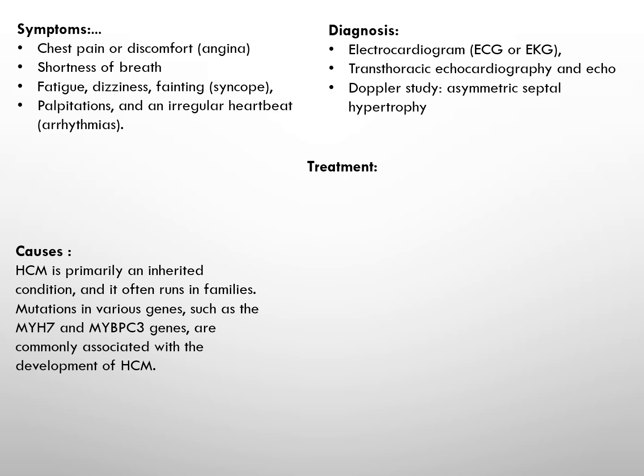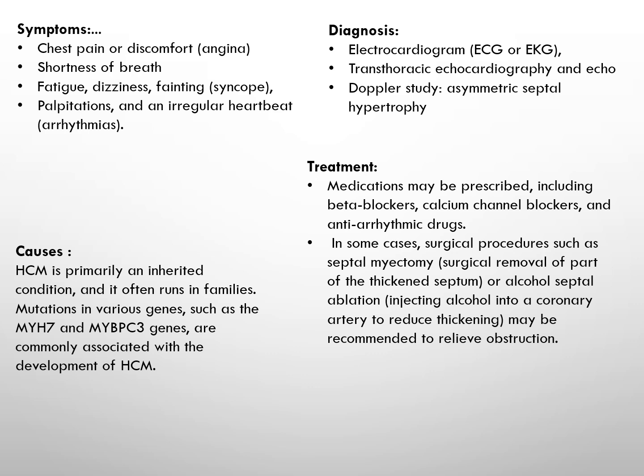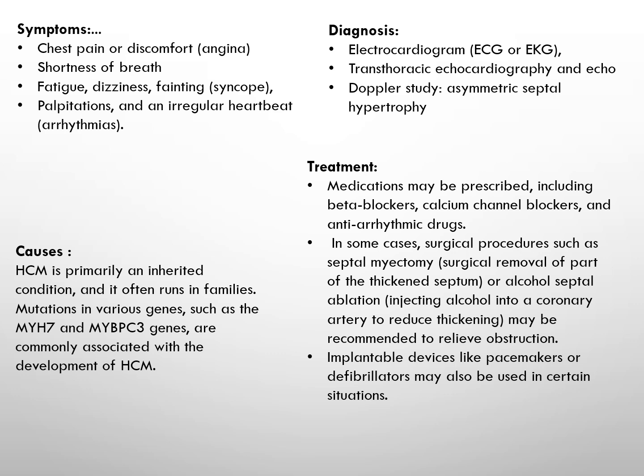Treatment for hypertrophic cardiomyopathy aims to manage symptoms, prevent complications, and improve heart function. Medications may be prescribed including beta blockers, calcium channel blockers, and anti-arrhythmic drugs. In some cases, surgical procedures such as septal myectomy or alcohol septal ablation may be recommended to relieve obstruction. Implantable devices like pacemakers or defibrillators may also be used in certain situations.